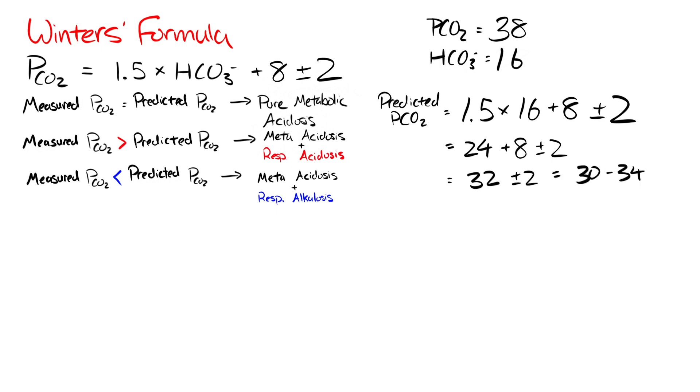Now, let's compare our measured PCO2 with our range. In this case, our measured is greater than our range. This fits with scenario number 2, which is a metabolic acidosis, which we knew about, but on top of that, a primary respiratory acidosis.